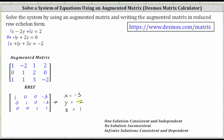We often write the solution to a system as an ordered triple, which in this case is negative three, negative two, one. This ordered triple satisfies all three equations. And because we have one solution, we can classify the system as consistent and independent.